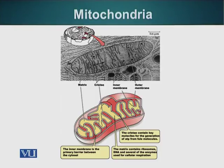Mitochondria can make some proteins. The number of mitochondria can vary from cell to cell. Some single-cellular organisms have one large mitochondria. Eggs have several hundred thousand mitochondria. An average liver cell will have about a thousand mitochondria. The number of mitochondria depends upon the energy requirements of the cell.